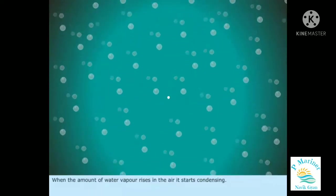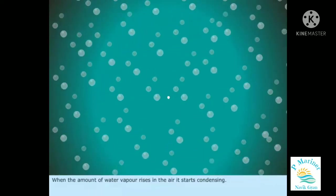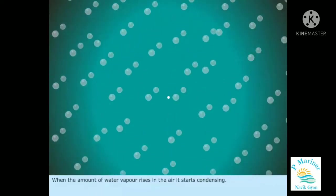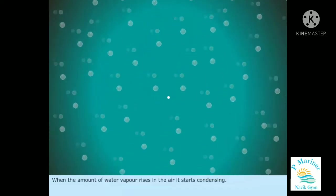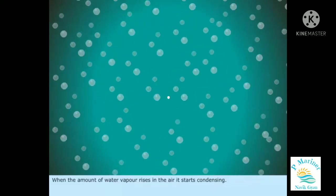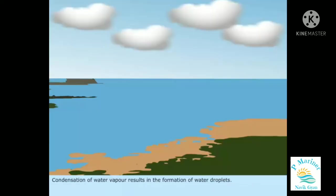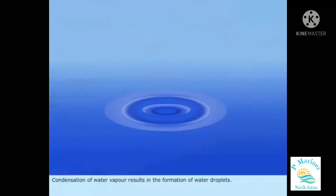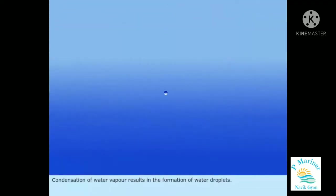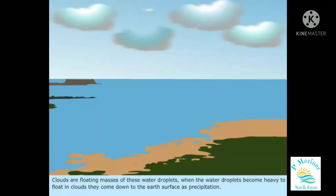When the amount of water vapor rises in the air, it starts condensing. Condensation of water vapor results in the formation of water droplets. Clouds are floating masses of these water droplets.